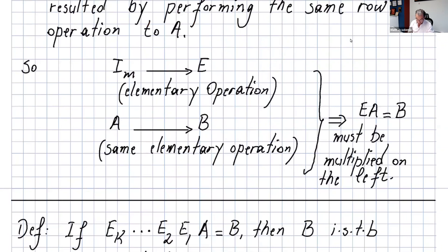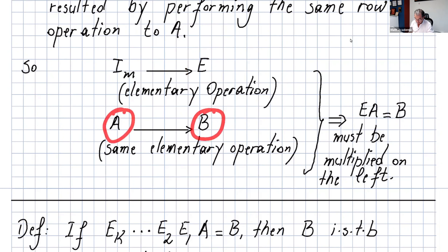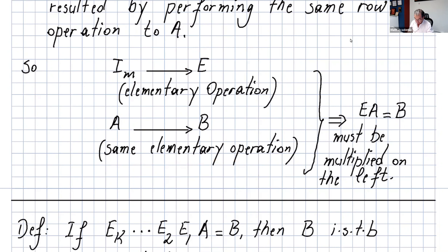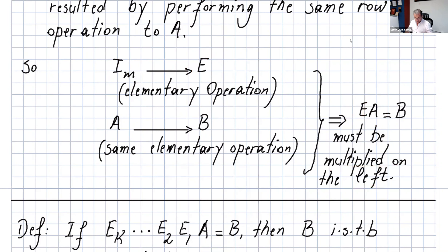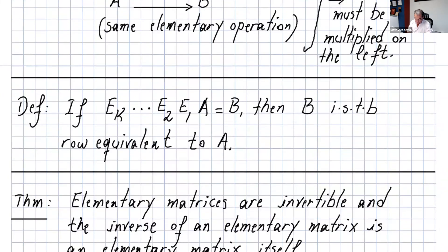Here's how it works: you take I_m, apply an elementary row operation, and get E. If you want to go from A to B directly, you can apply that same row operation to A. Equivalently, you can take A and multiply it on the left by E to get B.